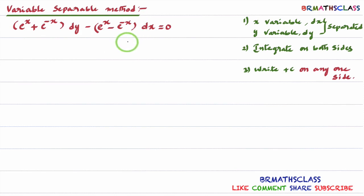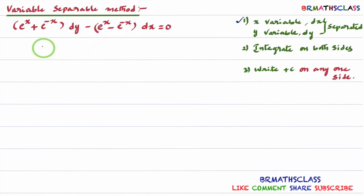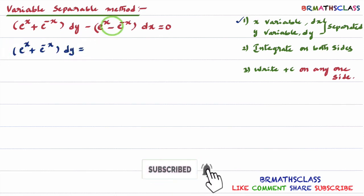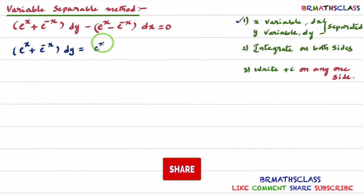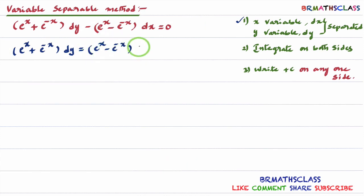In the variable separable method, you need to remember three steps. In the first step, x variables dx and y variables dy will be separated. I'll write all x terms with dx at one side and all y terms with dy at one side.